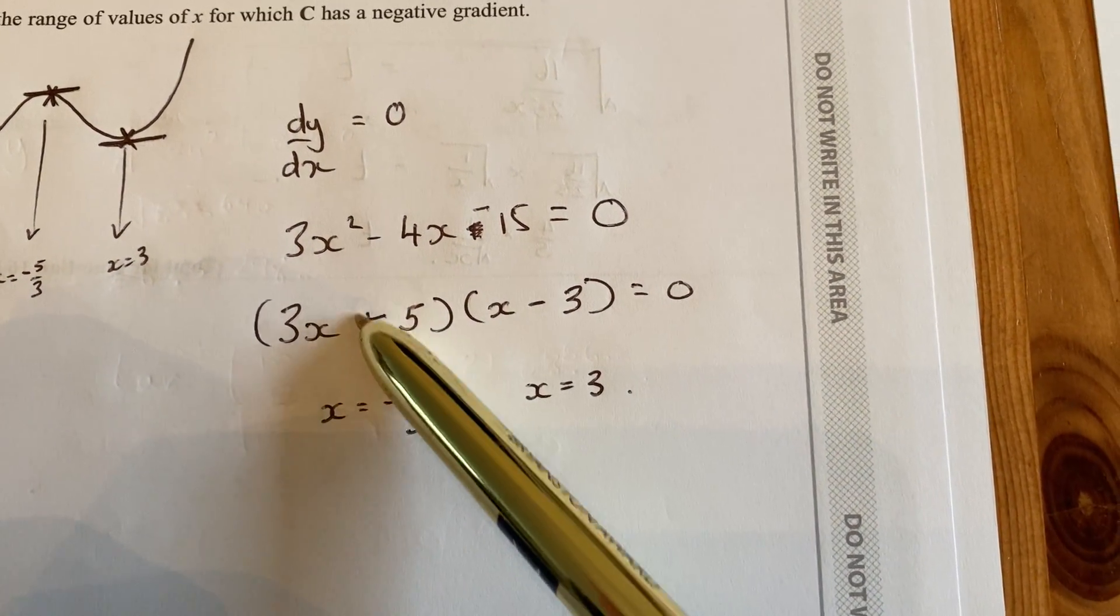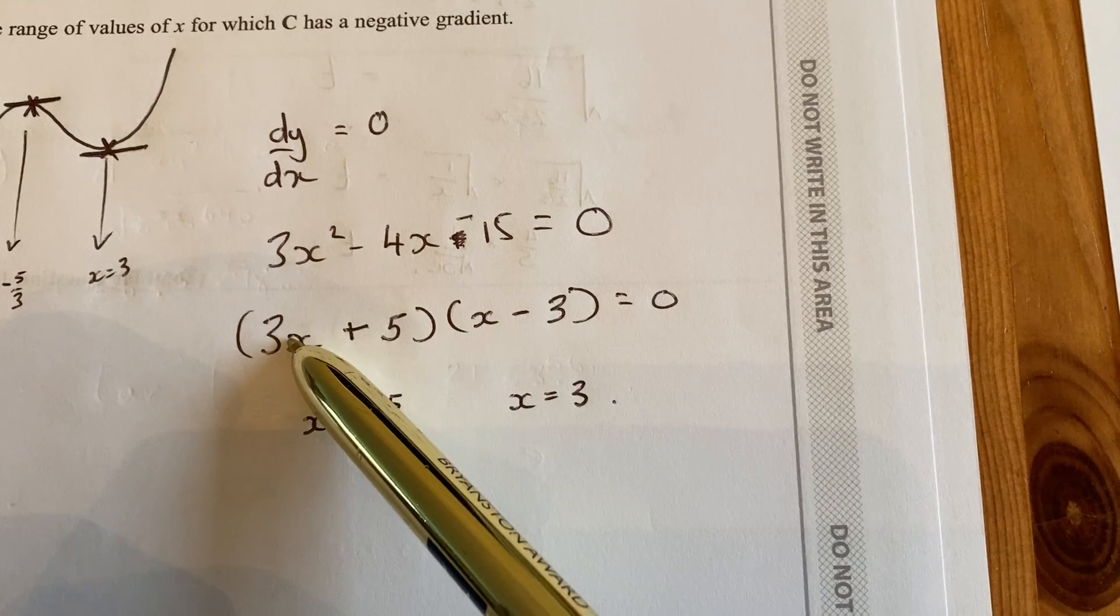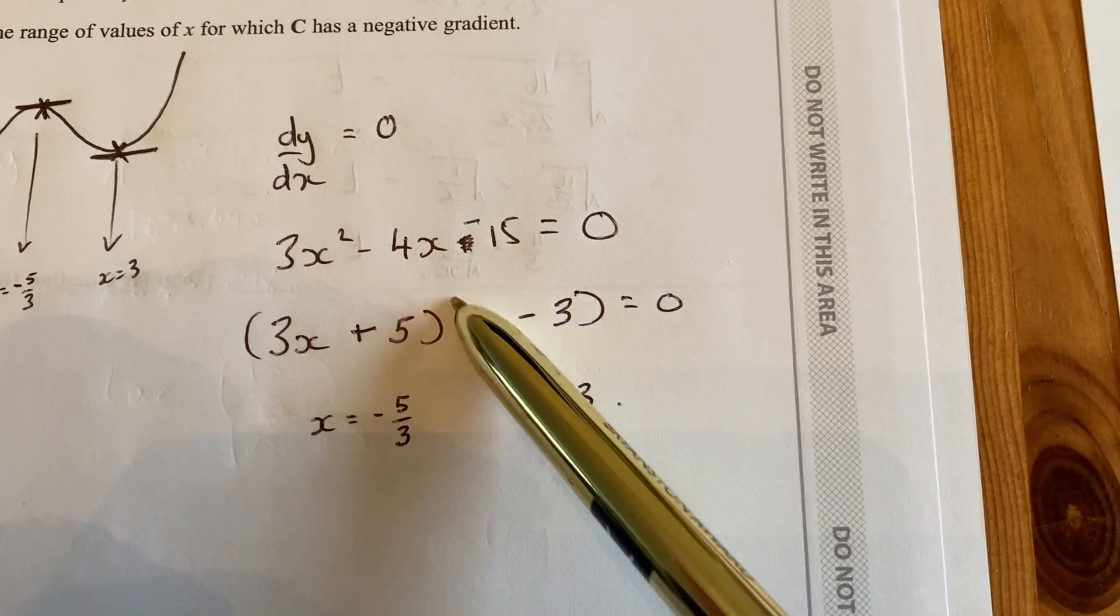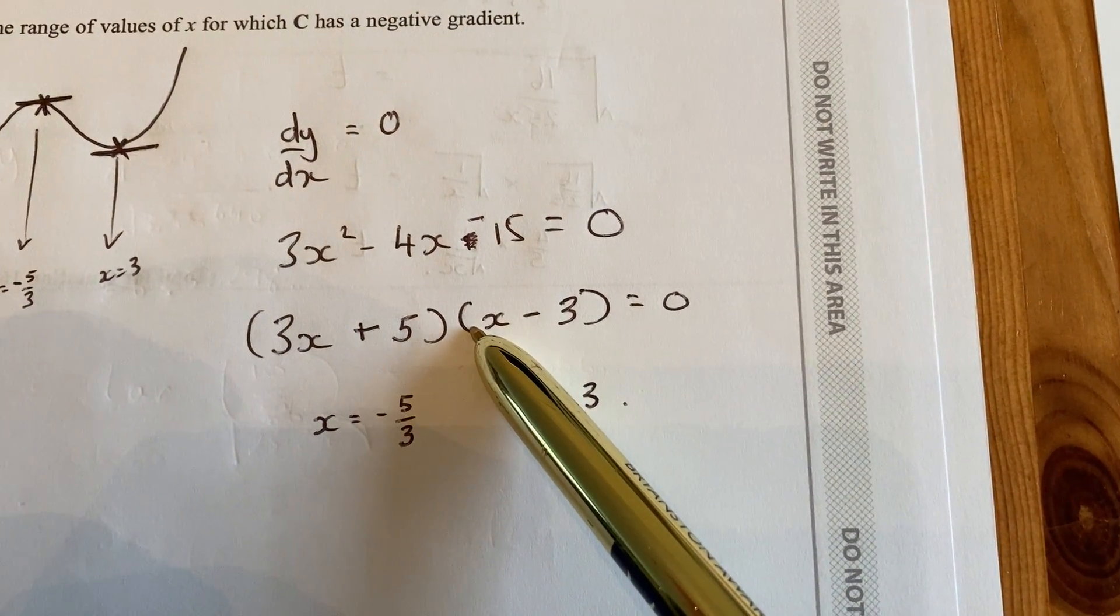It's a nice one that factorises, albeit with a 3 at the front. So you've got a 3 at the front of one bracket, and then just an x at the front of the other.